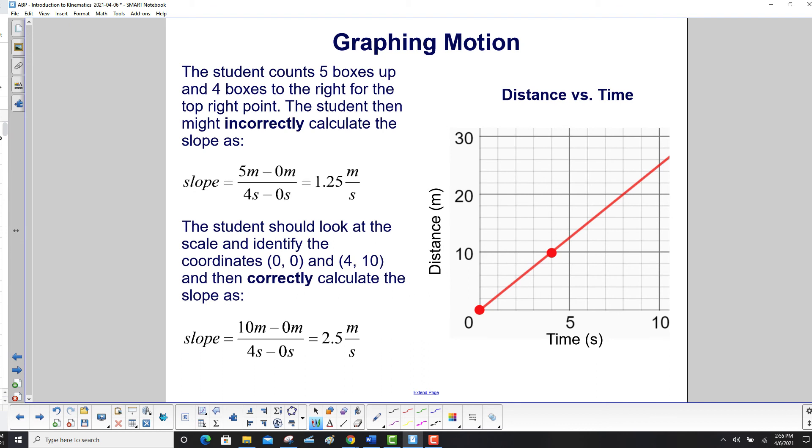The student counts five boxes up and then four boxes to the right for this point here. The student then might incorrectly calculate the slope as five meters minus zero meters, four seconds minus zero seconds, and get 1.25 meters per second. Okay, so obviously that's wrong because we said incorrectly.